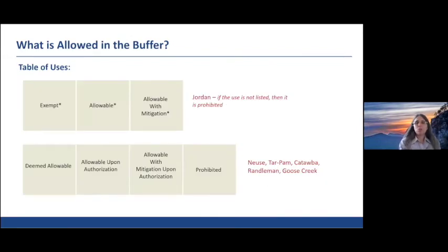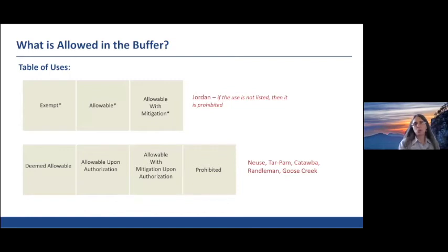All of the buffer rules have a table of uses. If you've used it before, you know it can be difficult to navigate. The intent is that if your activity is listed in the table of uses, you may be able to proceed without needing anything from the buffer implementing authority — the local government or the state. However, some activities are only allowable upon approval, so you may need to get authorization first. That approval process ensures minimum impacts are occurring to the buffer.